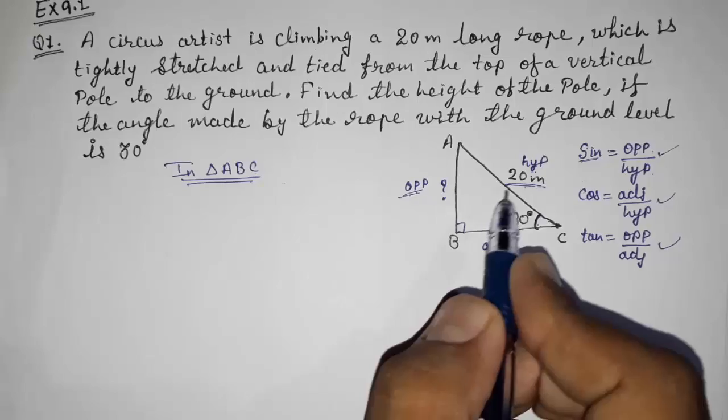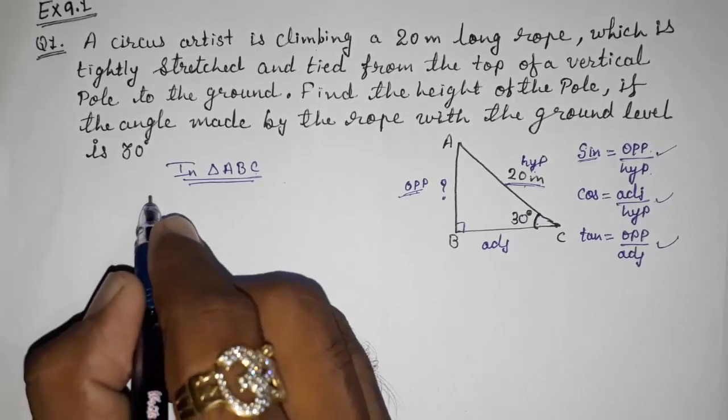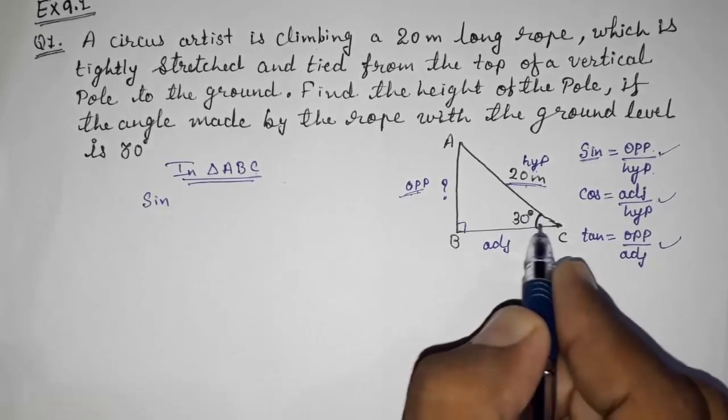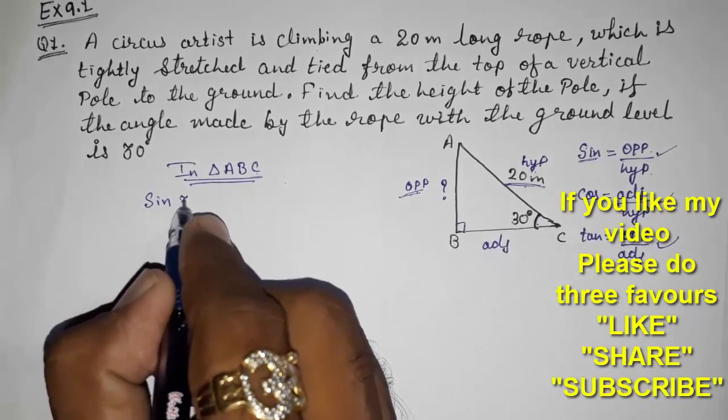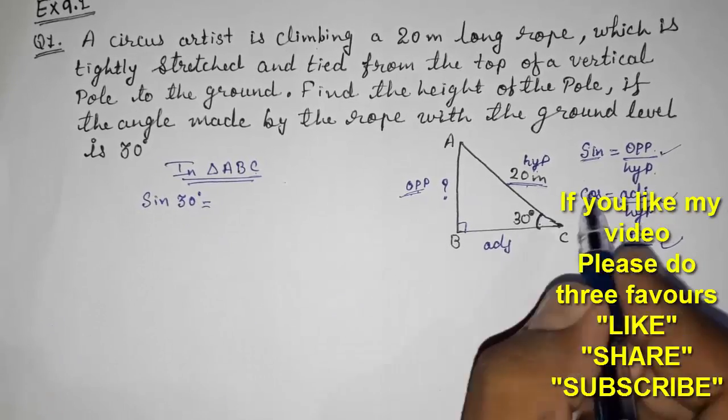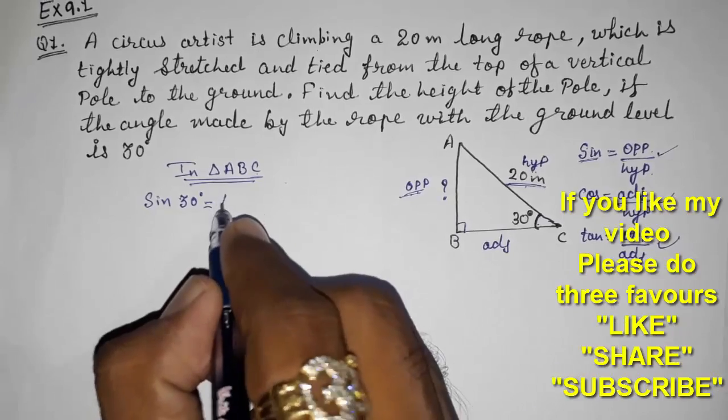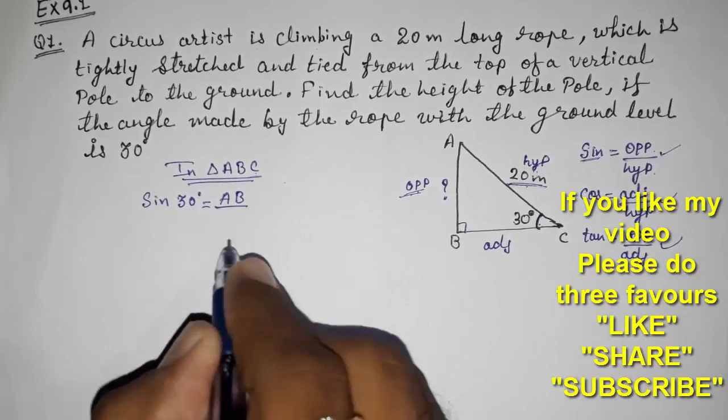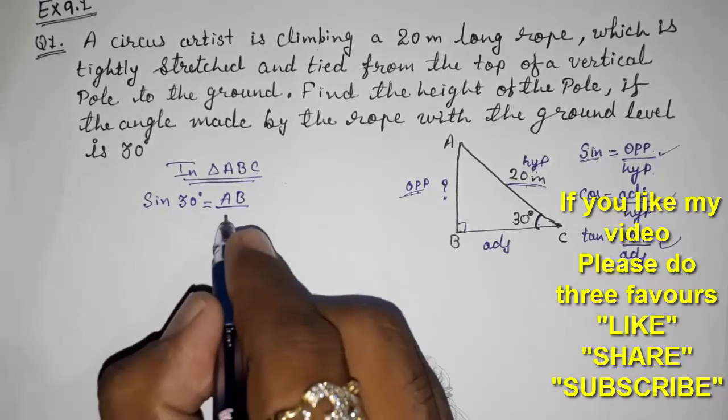Now we are going to use sine. Sine, and our degree is 30, so sine 30 degrees gives you opposite by hypotenuse. So our opposite is here AB, and our hypotenuse is AC.